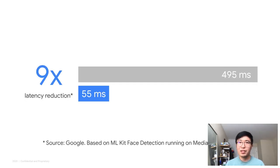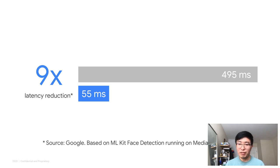We can see similarly great improvements for models running on other SoCs. Here is an example of running the ML Kit Face Detection model on a device with a MediaTek P90 SoC. As ML is evolving fast, more and more models are running on mobile devices, and different models on different devices may show different performance characteristics. We are continually working hard to optimize the software layers and introduce new features to make inferences faster.